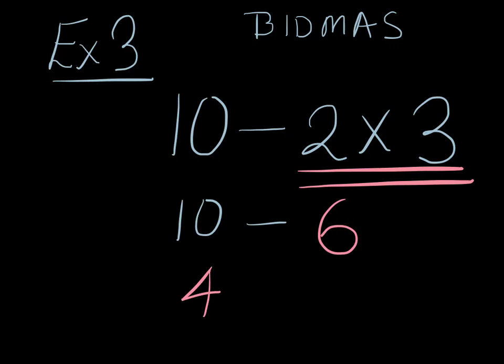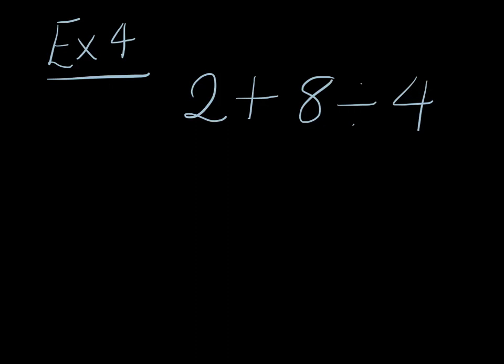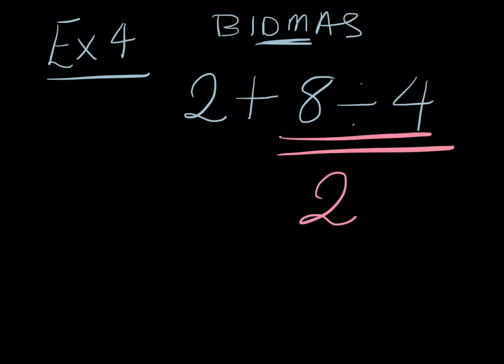Right, let's go on to something with division in it. Let's do example 4 here. Let's suppose we had something like 2 + 8 ÷ 4. Now, BIDMAS tells us brackets, indices, division or multiplication. We've got a division. So let's do this first. 8 ÷ 4 is 2. And we've got another 2 here. So 2 + 2, which is 4. And we're done.